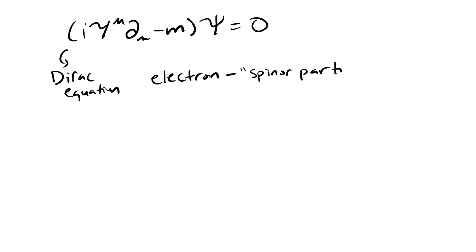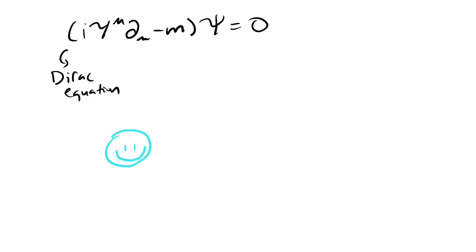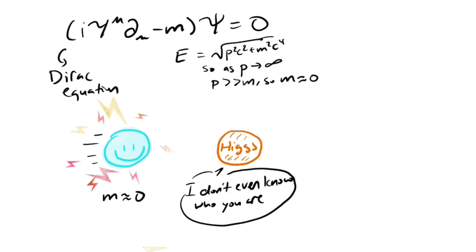Remember that spinor particles such as electrons satisfy the Dirac equation. For simplicity, let's define an electron as any particle associated with a spinor field. In high-energy physics, we can approximate the electron as massless, so we need to solve the massless Dirac equation.